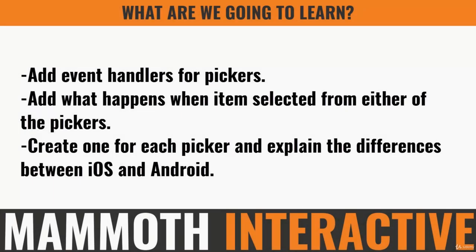In this part of the tutorial we're going to add the event handlers for the two pickers. This is basically adding functions to determine what will happen when an item is selected from either of the two pickers. We're going to create one handler for each picker — the missing variable picker and the calculation picker — and I'm going to explain the differences between how to do this in iOS and Android.